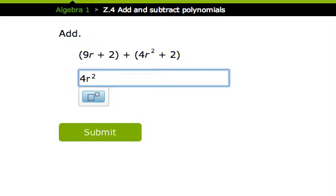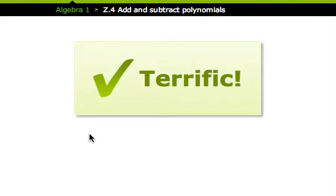So we have 9r, no other r, so it stays 9r. And then we have 2 plus 2, and that is going to get us 4. Dang straight, it's terrific.